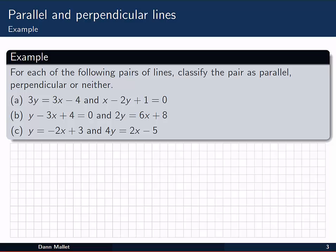Here's an example. Actually three examples. For each of the following pairs of lines, classify the pair as parallel, perpendicular or neither. What you need to do here in each case is rearrange the equations to get them in y equals mx plus c form, and then have a look at the slopes of the lines. I'll do the first one and then leave you some time to try out the other two.